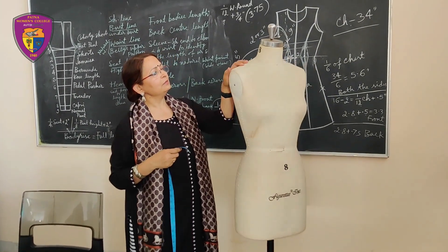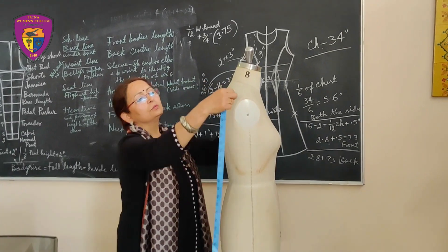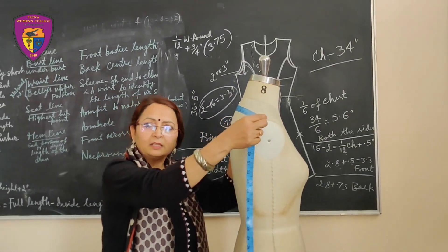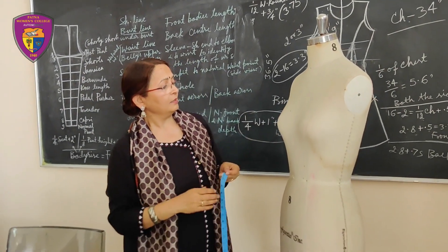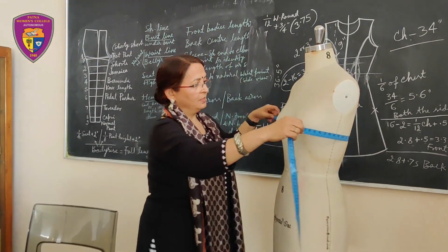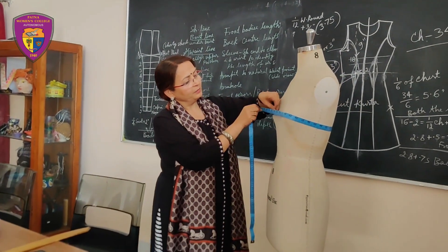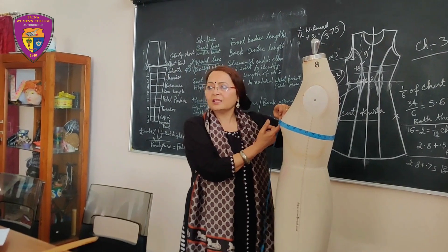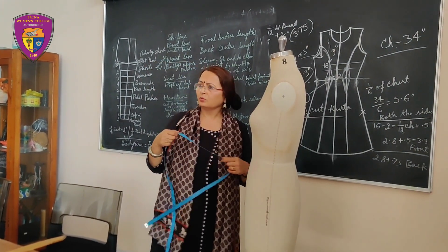Shoulder line means one shoulder to another shoulder — the distance between one shoulder to another. Bust line is the highest portion of chest. You will take the measurement like this — one finger should go inside. Not too tight or too loose.